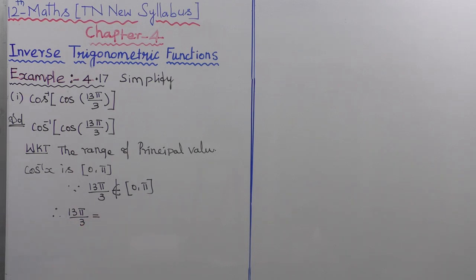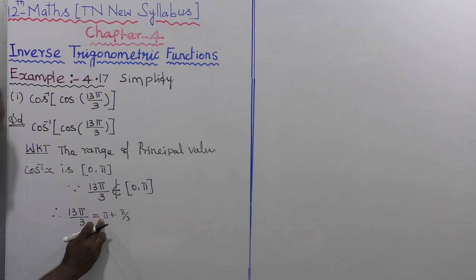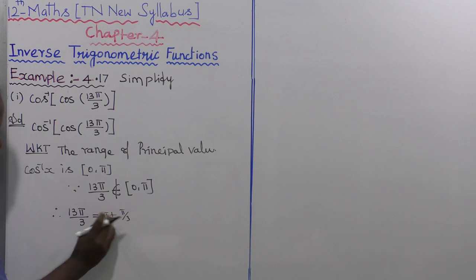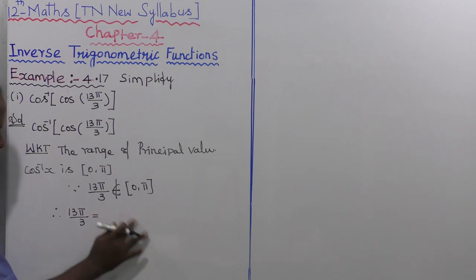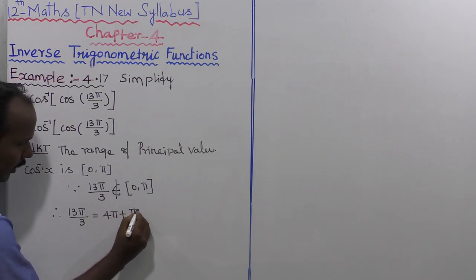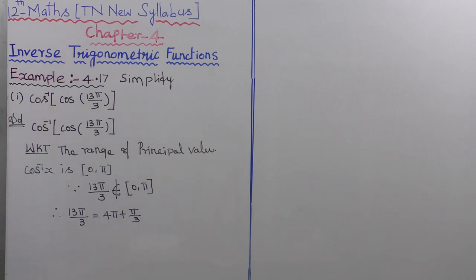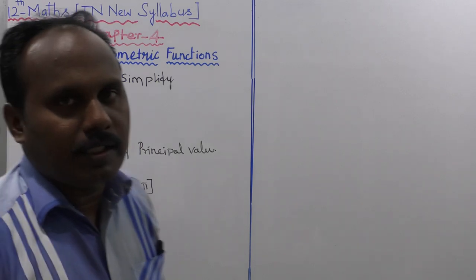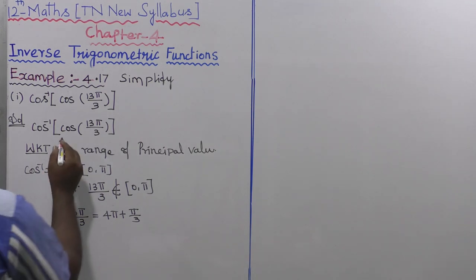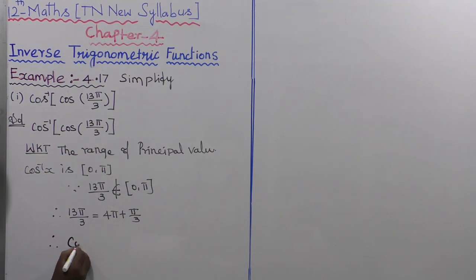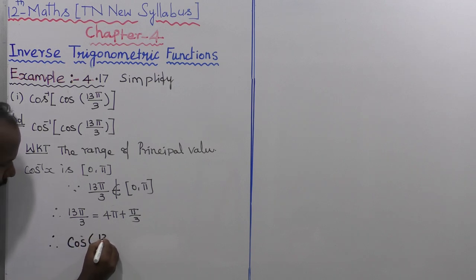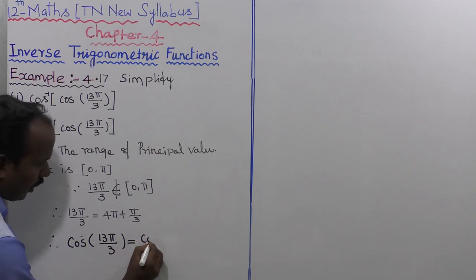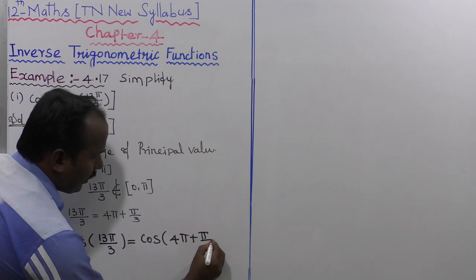Therefore, 13π/3 — let us break this down. π + π/3 gives (3π + π)/3 = 4π/3, not in interval. 2π + π/3 gives 7π/3, not in interval. 3π + π/3 gives 10π/3, not in interval. 4π + π/3 only exists in [0, π] since 4π means the first quadrant. So cos(13π/3) = cos(4π + π/3).